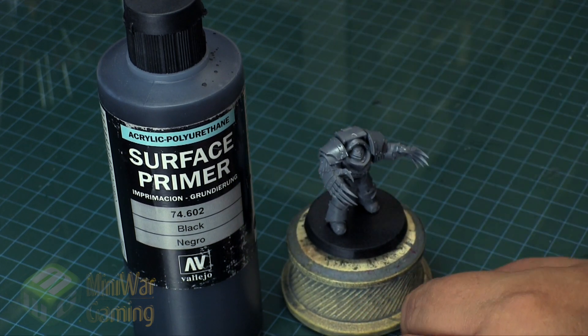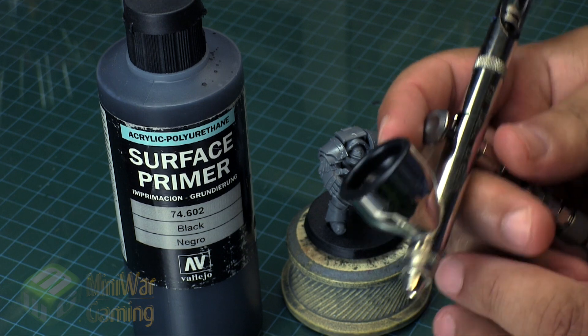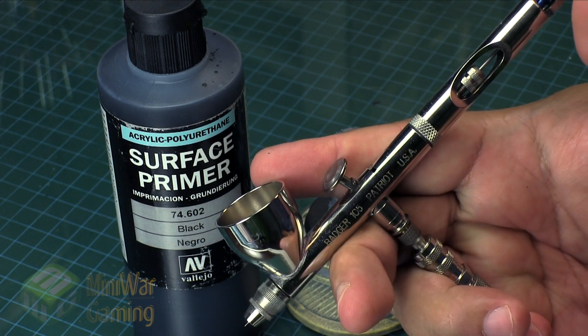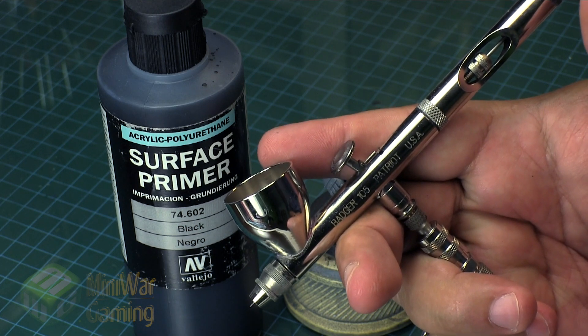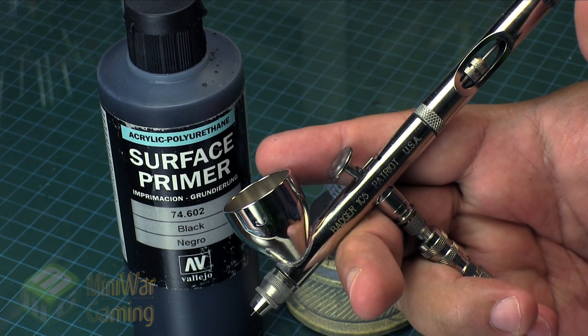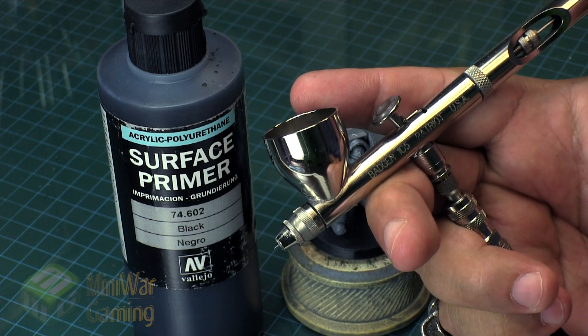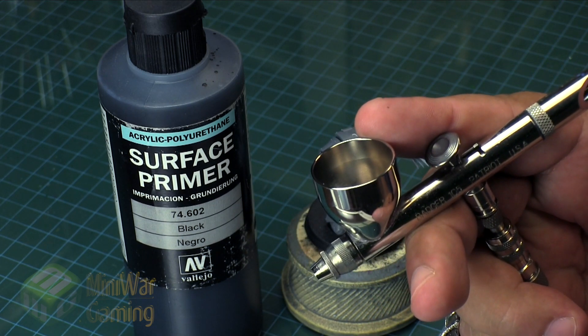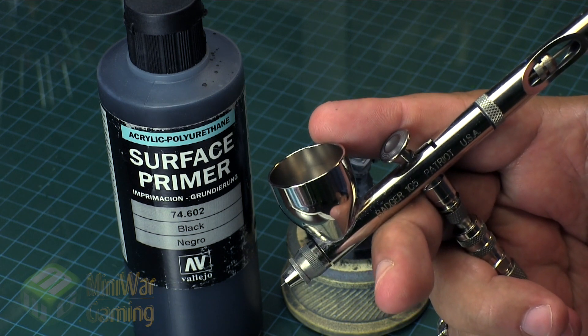Most of the time when I am putting on my primers I am using a Badger Patriot 105. This is a fairly straightforward utility type airbrush. It's got a 0.5 needle I believe and it's got a really nice cup size for doing large jobs.